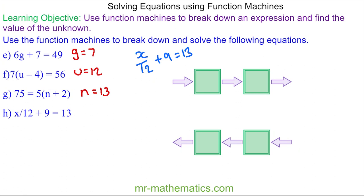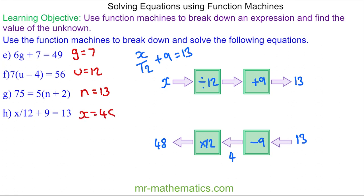Finally for question h, x goes into our machine, we're dividing it by 12, and then we're adding 9 to get 13 as the output. Going the other way: 13 take away 9, then multiply by 12. 13 take away 9 is 4, and 4 multiplied by 12 is 48, so x = 48. Thank you very much for watching — I hope you found that useful. Thanks again and take care.